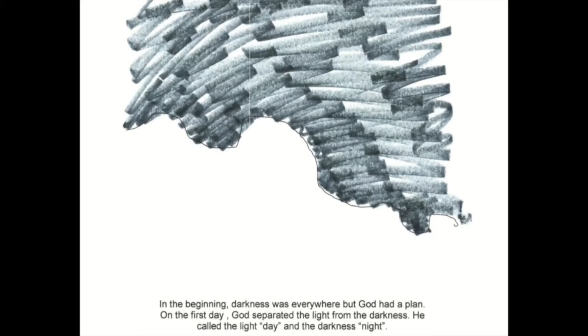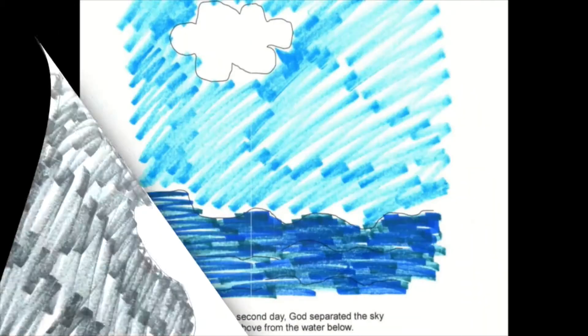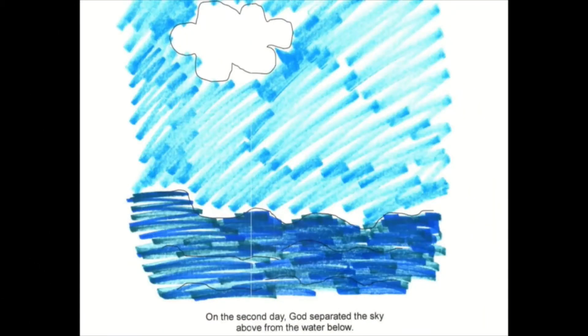On the first day, God separated the light from the darkness. He called the light day and the darkness night. On the second day, God separated the sky above from the water below.